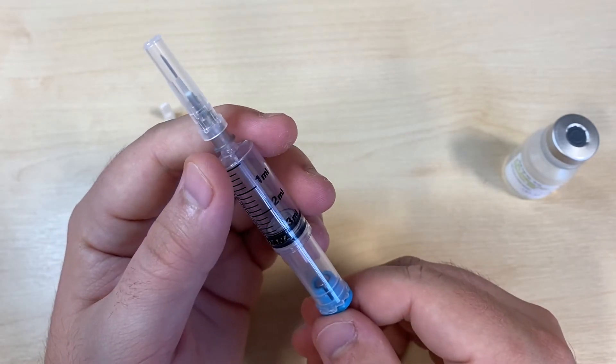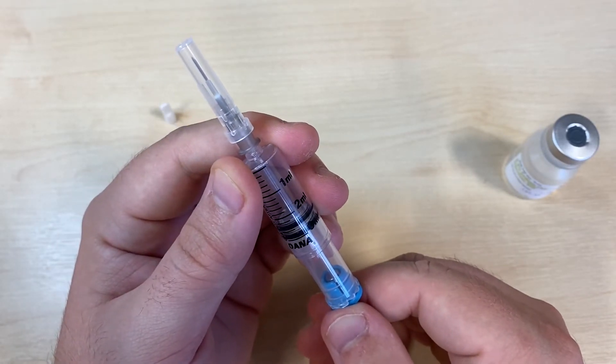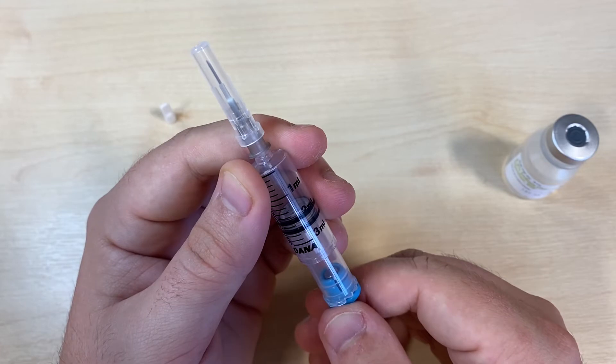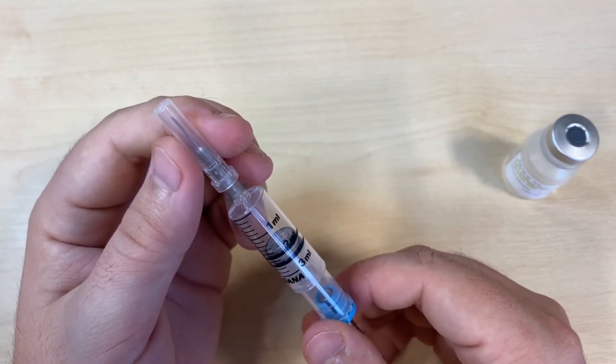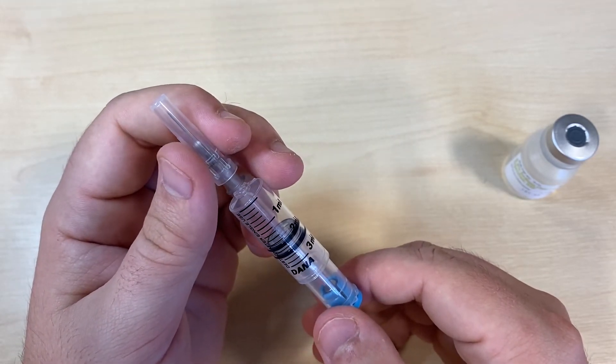Decide on how much insulin you'd like to fill, and set your plunger to that length. Each mill is 100 units, and each of the short markers is 20.